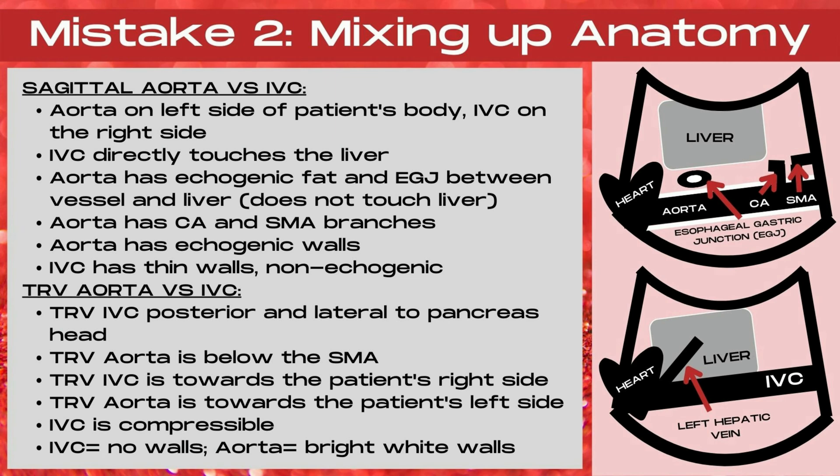When you're trying to distinguish between the transverse aorta and the transverse IVC, the transverse IVC is going to be below and lateral to the pancreas head, while the transverse aorta is going to be below the SMA. The transverse IVC is going to be towards the right side of the patient's body, and the transverse aorta is going to be towards the patient's left side of the body. The IVC is going to be compressible, and also look for those walls — the IVC is going to have no walls, while the aorta is going to have bright white walls.